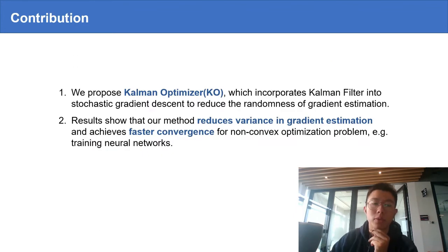In this paper, we propose Kalman Optimizer, which incorporates Kalman filter in stochastic gradient descent to reduce the noisiness of the gradient estimation. The results show that our method reduces the variance and achieves fast convergence.